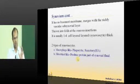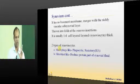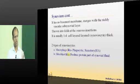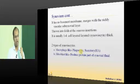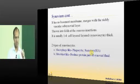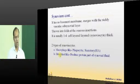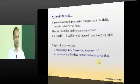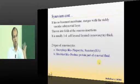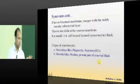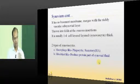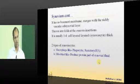These synoviocytes, the cells within the synovium are of two types. One is macrophage type. These cells also secrete the hyaluronic acid, that is type A cells. Type B cells are fibroblast like cells. They secrete the protein part of the synovial fluid, that is mucin, which is contributing to the mucin clot test. The viscosity is mainly because of this proteinaceous part which is the synovial fluid.